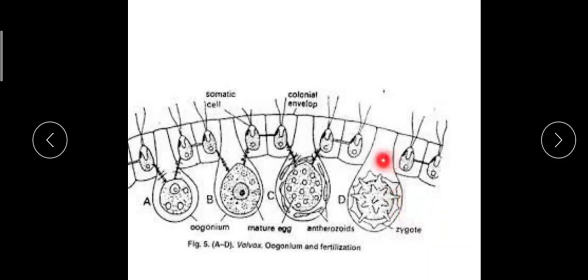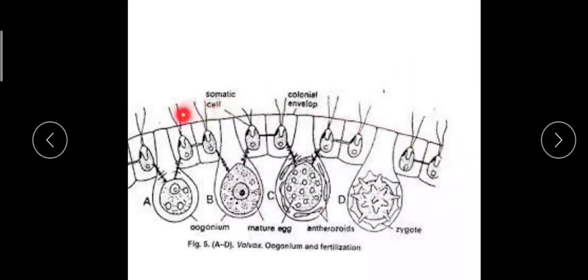When the zygospore is released, it is released free to the outside by the death and disintegration of the parent colony. Since it is inside the parent colony, only when the parent colony disintegrates does the zygospore become free.